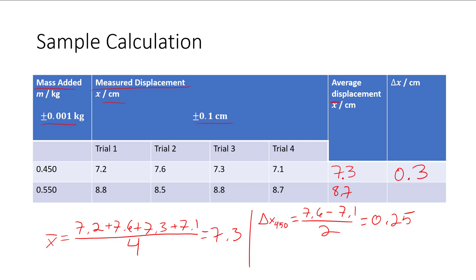We're going to do the second one again. The largest value is 8.8, the smallest value is 8.5. Subtract them and divide by 2, we get 0.15, or 0.2 uncertainty. So that's how we calculate our uncertainties for each variation.